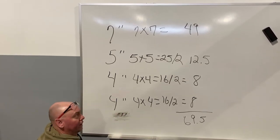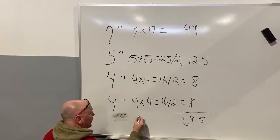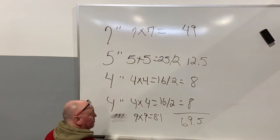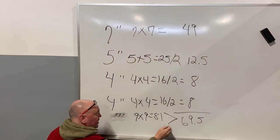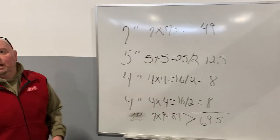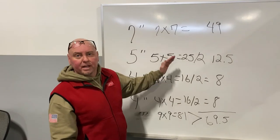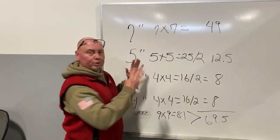Let's try another one. Let's do 9, 9 times 9, 81. 81 is greater than 69.5. So that would be the appropriate size pipe for that manifold, 9 inch would handle those appliances.